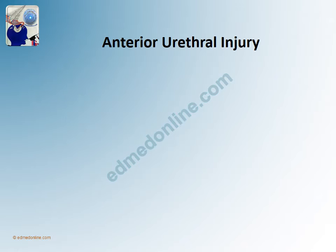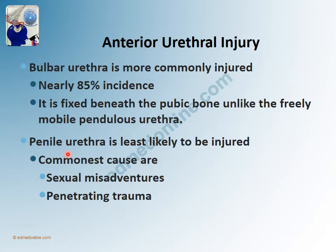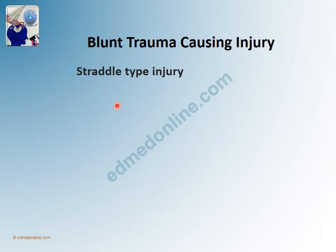Anterior urethral injury can be caused by blunt trauma, penetrating trauma, or iatrogenic injury. It most commonly involves the bulbar urethra, affected in about 85% of cases. This tends to occur because it is an area which is fixed beneath the pubic bone, unlike the more mobile pendulous or penile urethra. The penile urethra, because it is mobile, is least likely to be injured, and the commonest causes of penile urethral injury are penetrating trauma, sexual misadventure, or iatrogenic trauma.